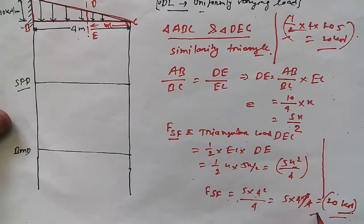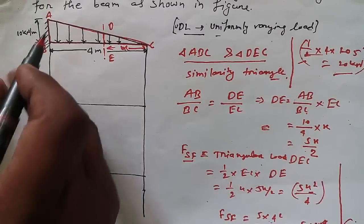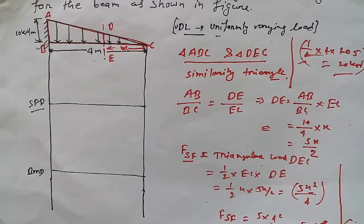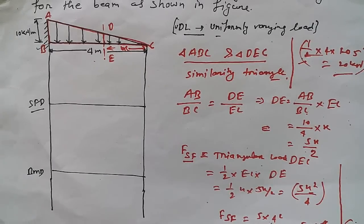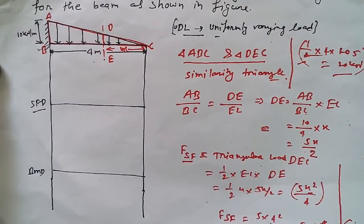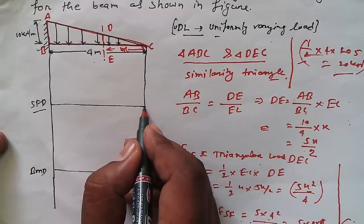Now, one most important concept: in case of UVL we have to draw the shear force diagram as a parabola, and the bending moment diagram as a cubic parabola. Another thing: if the thicker side — meaning the side with the maximum value — is on the fixed side, then we have to draw the parabolic diagram for the shear force diagram accordingly.